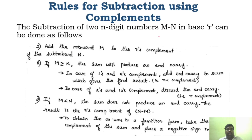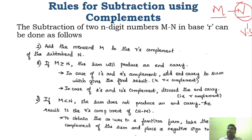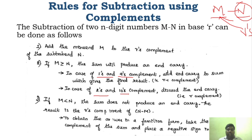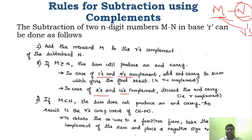Once again, let me briefly recap. In any subtraction, it is m minus n — m is the minuend and n is the subtrahend. In the first step, we find r's complement of n. Then in the last step for r's complement and 10's complement, you have to just discard that particular carry. And similarly, if carry is not produced, we have to find out r's complement of that particular sum and then place a negative sign.